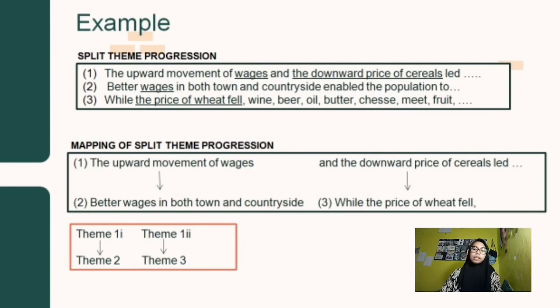The first is the upward movement of wages and the downward price of cereals led. The second is better wages in both towns and countryside enable the population to blah, blah, blah. And the last is, while the price of wheat fell, wine, beer, oil, butter, cheese, meat, fruit, and blah, blah, blah. Nah, dari ketiga klausa tersebut, klausa kedua dan klausa ketiga adalah split theme progression. Nah, mapping-nya seperti ini. The upward movement of wages and the downward price of cereals led, kita bagi menjadi dua.